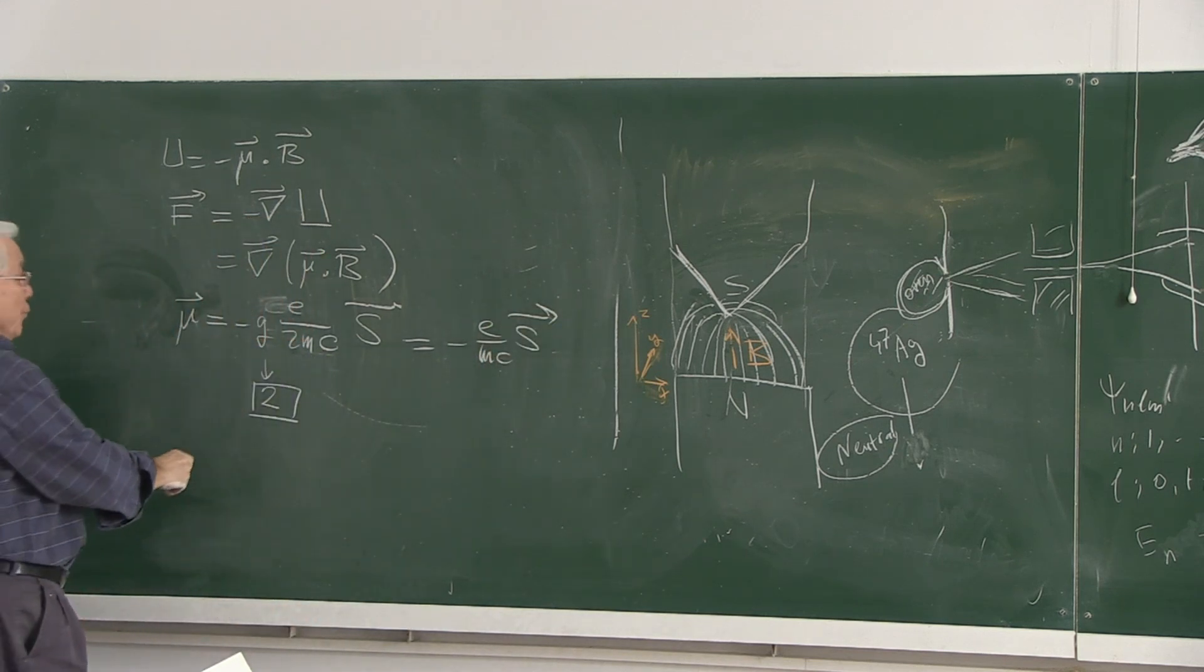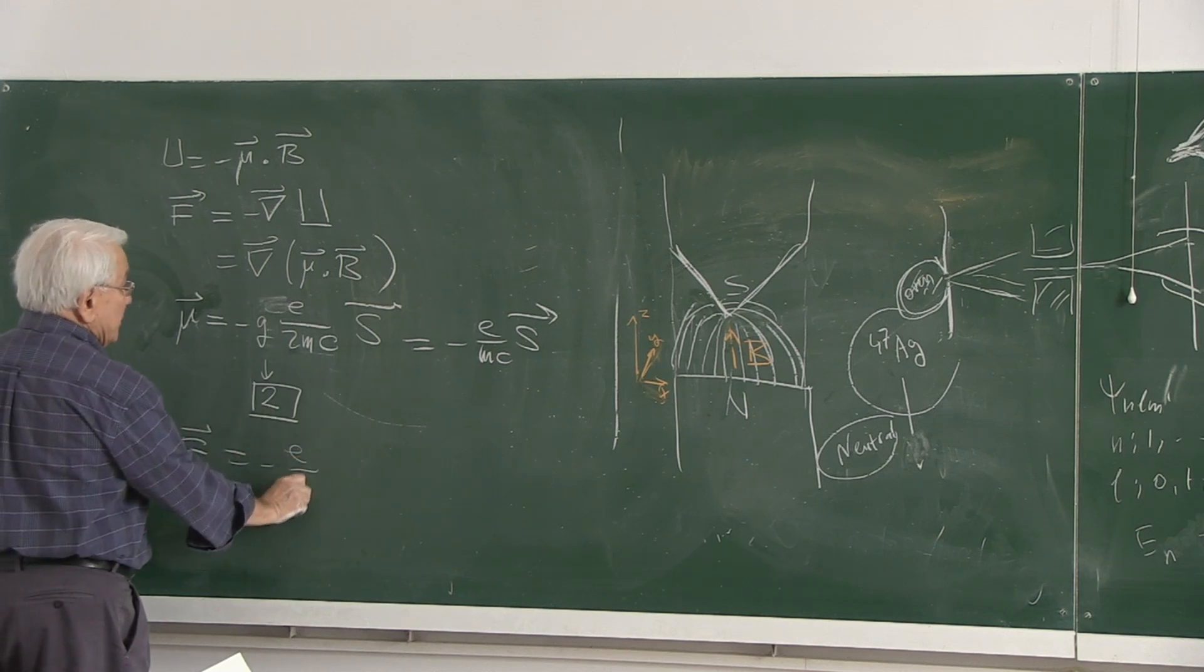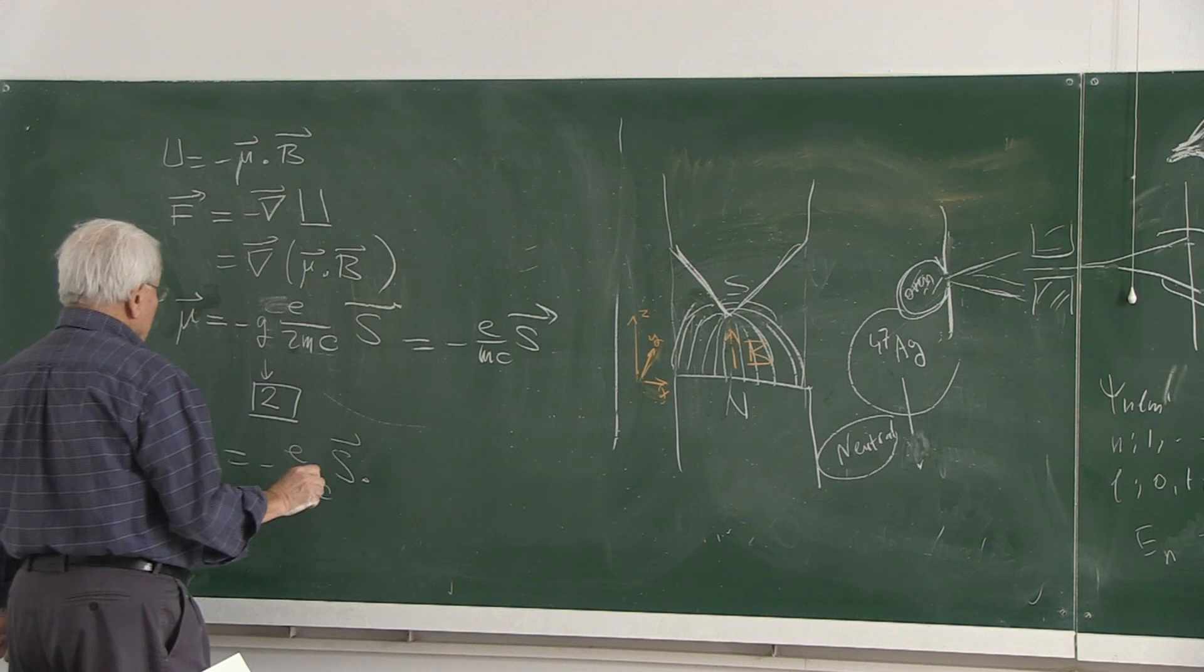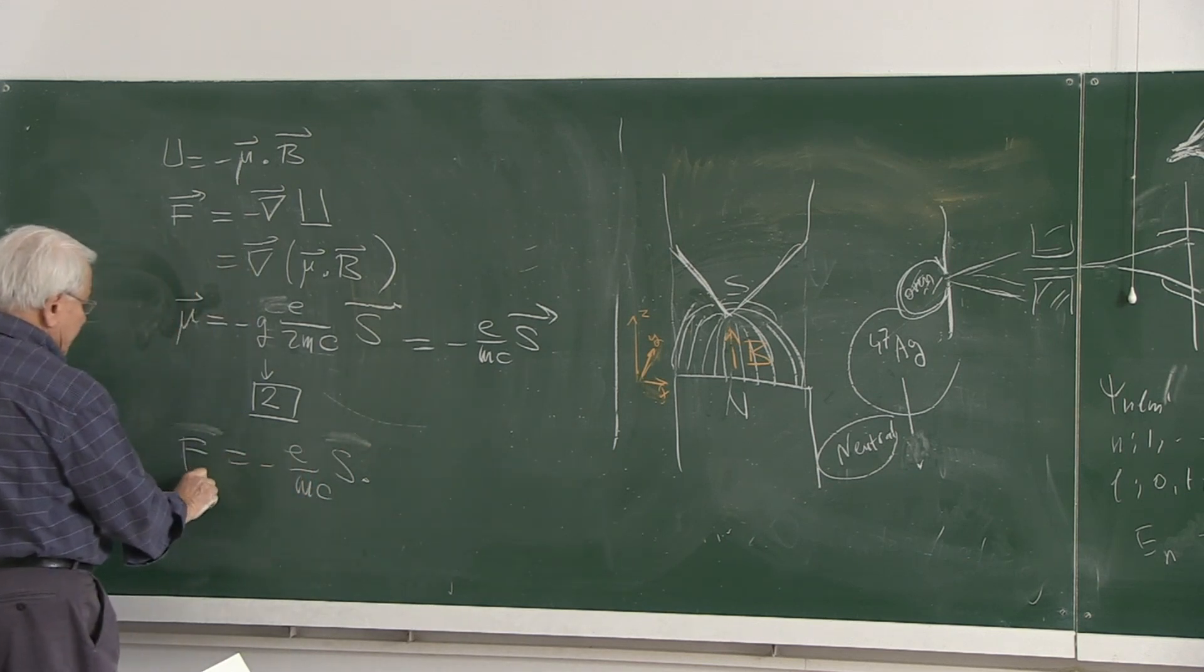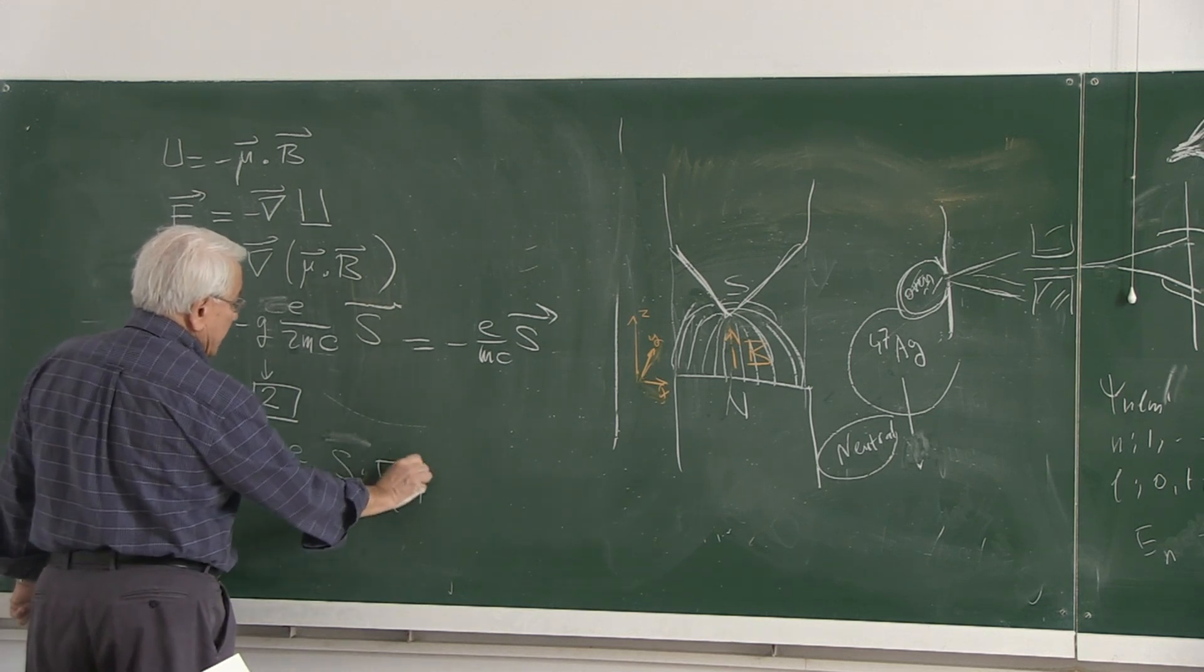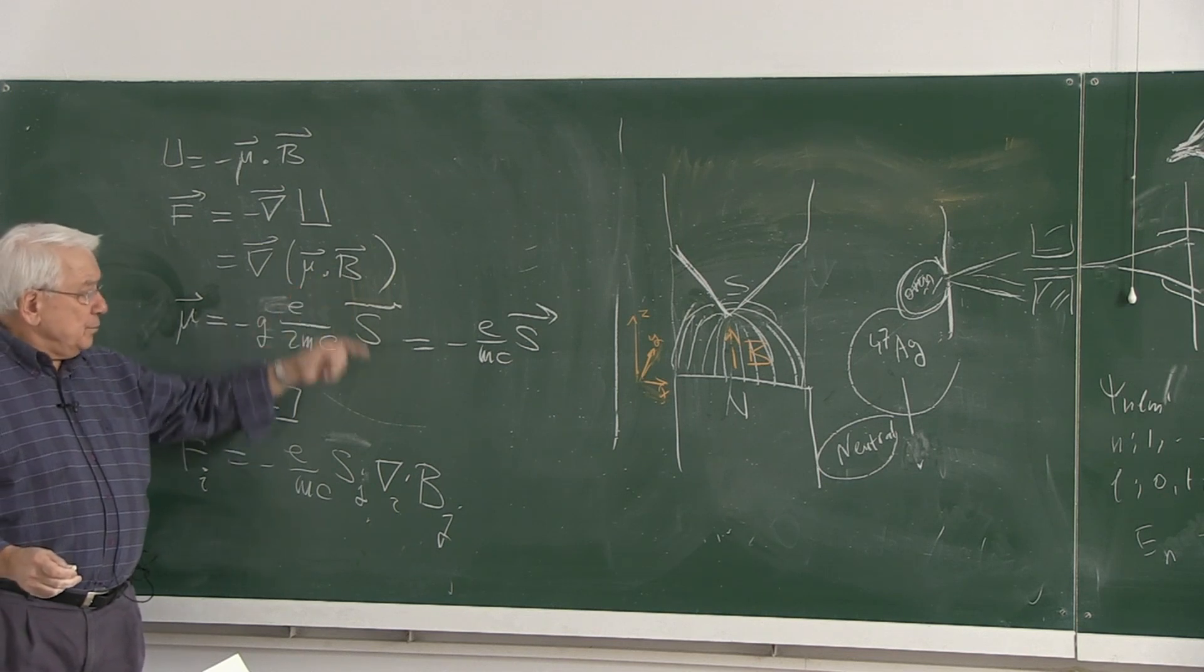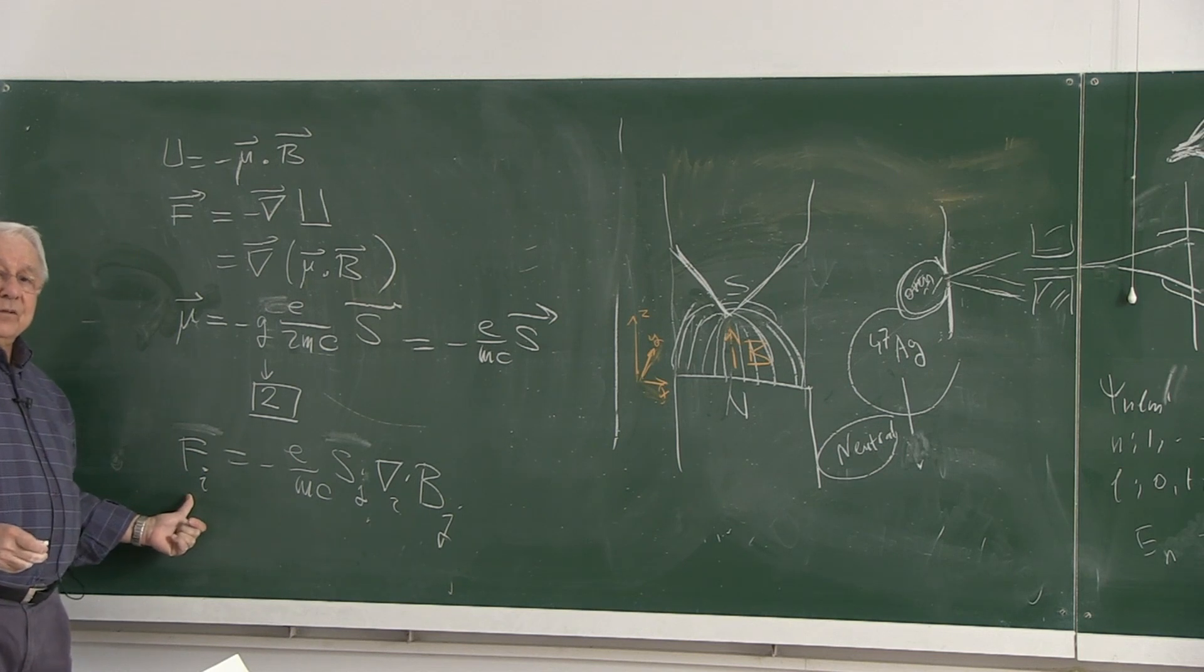Therefore, when you put those quantities in, the force becomes e over, there is again a minus, e over mc. I have to use now a notation which I have to refer to the index notation to make it safe. f_i, s_j, d_i, b_j. Notice that repeated indices are summed over. That takes care of the dot product of the s with b, and d_i is the gradient, the same index as carried by the force.